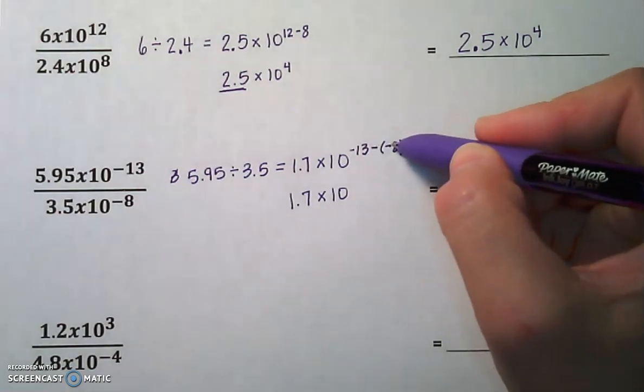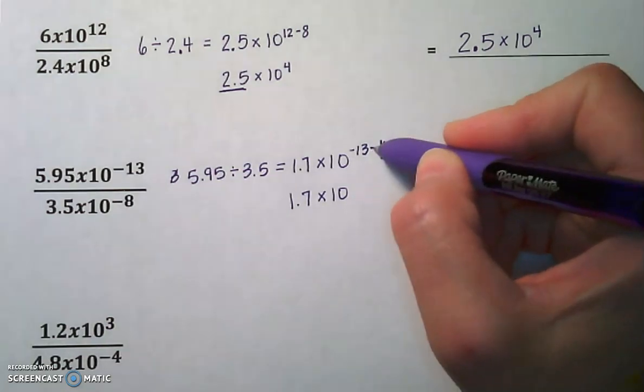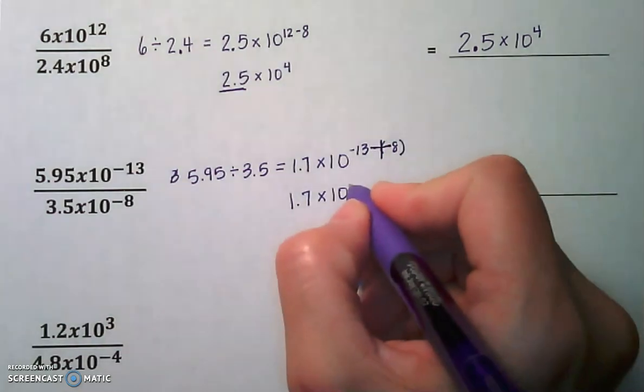That minus, subtract a negative, that becomes a plus. So it's negative 13 plus 8, which gives us negative 5.